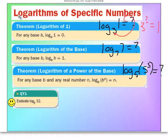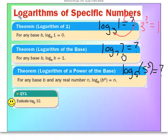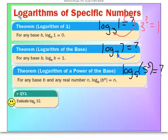The second theorem is log base B of B will always equal 1. For example, log base 7 of 7 — you don't have to memorize the theorem, just rewrite it as an exponent: 7 to some power equals 7. What does the answer have to be? It's 1.